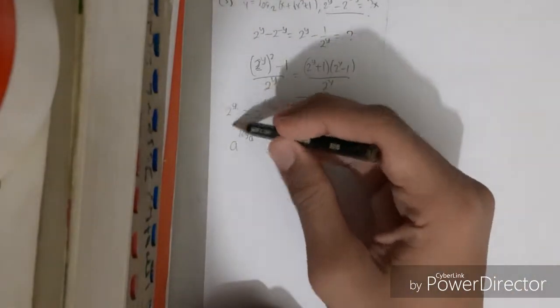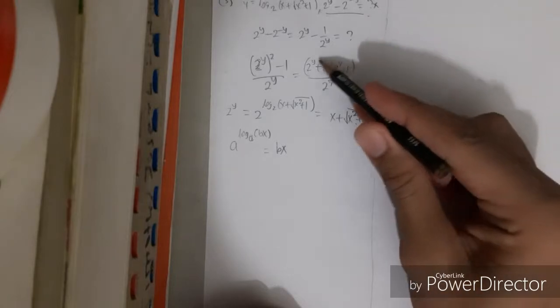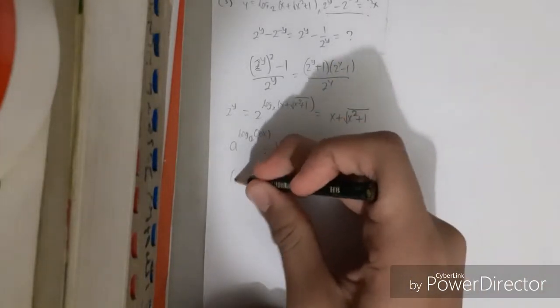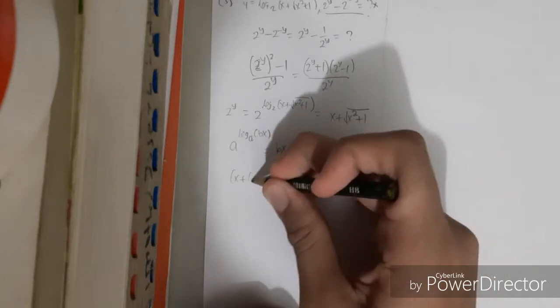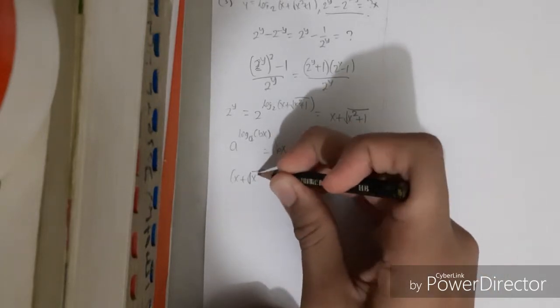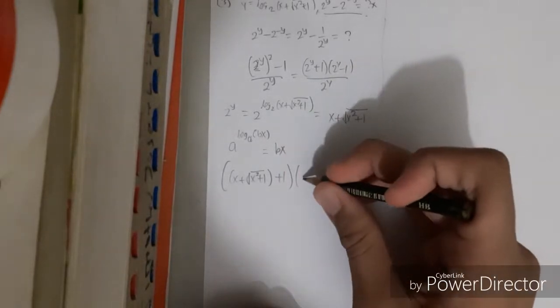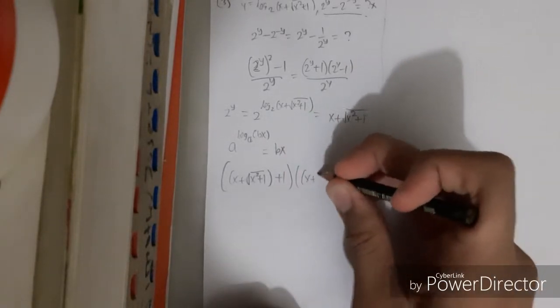So we can substitute 2^y with this in this fraction: x plus root of x squared plus 1. Just want to bracket it and start going.